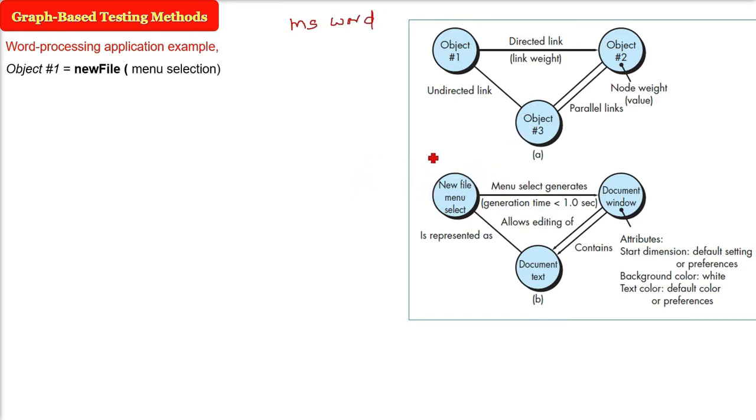The objects first will be, whenever you invoke Microsoft Word, there will be a menu, file new. Click file, new will come. So new file menu select is an object. The second object can be document window. Whenever we click on new file, there will be a window, a plain clean window will come. And then we have a document text. This is the object 3.